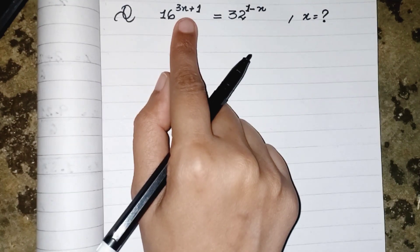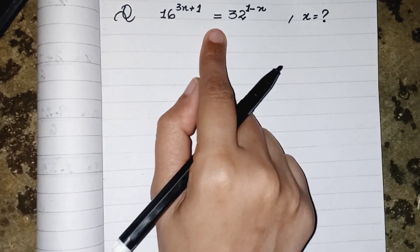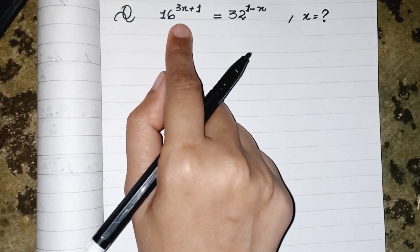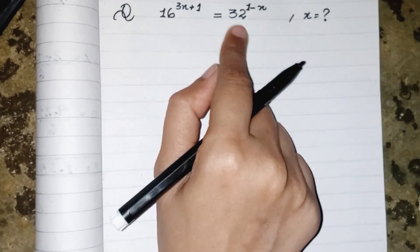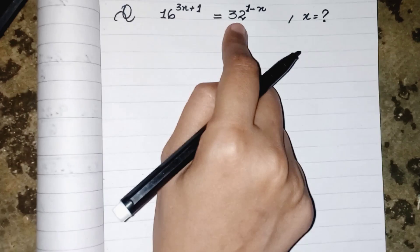These kinds of equations are known as exponential equations. To find the value from the power, we have to equate the bases, then we can find the values from the power. So 16 and 32 both are the multiples of 2.